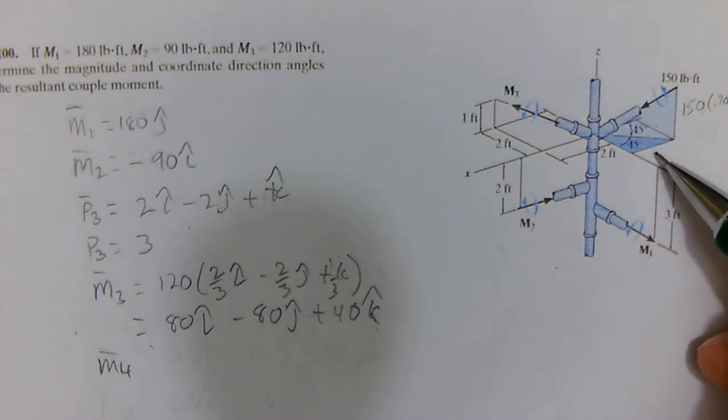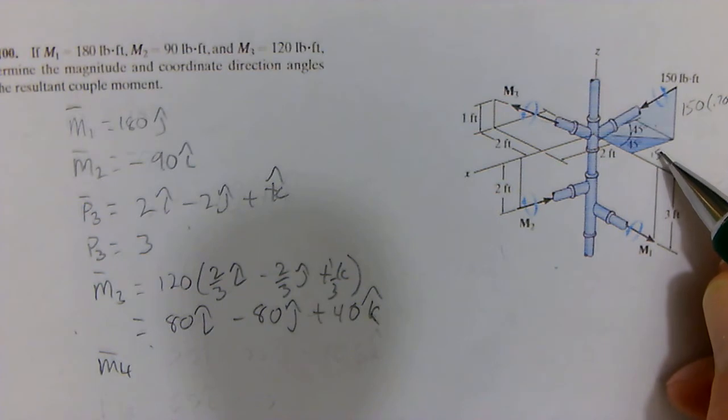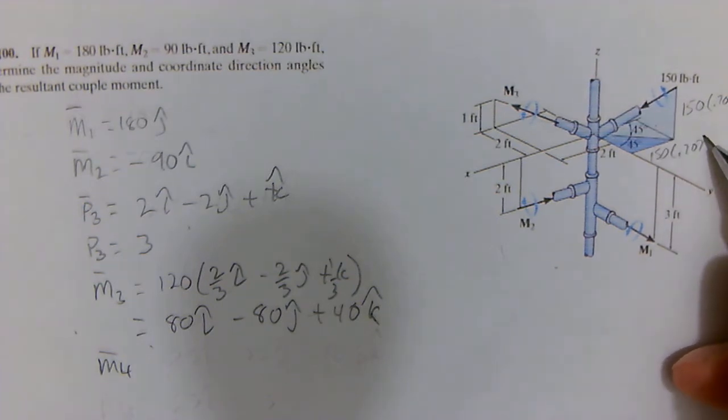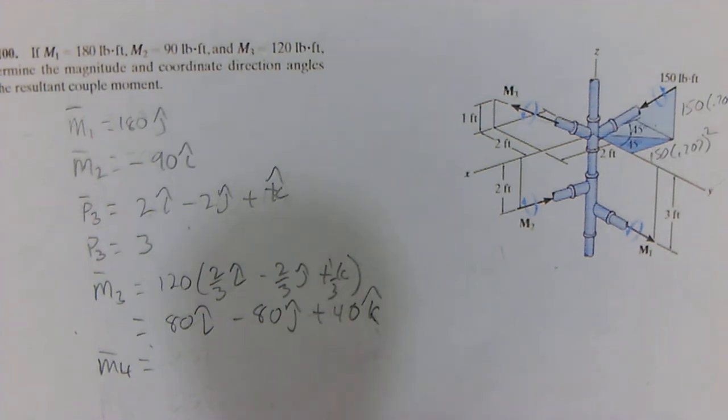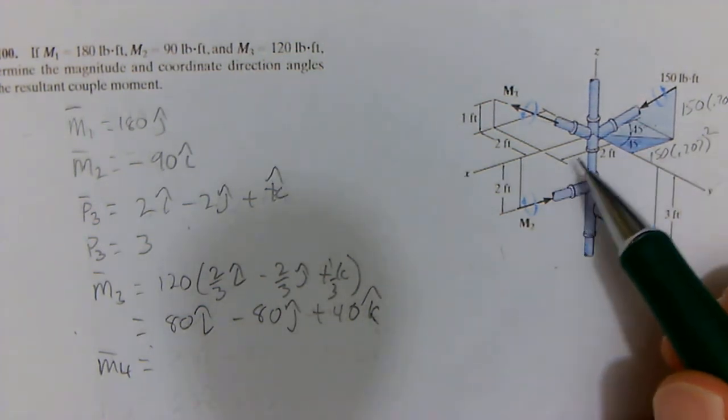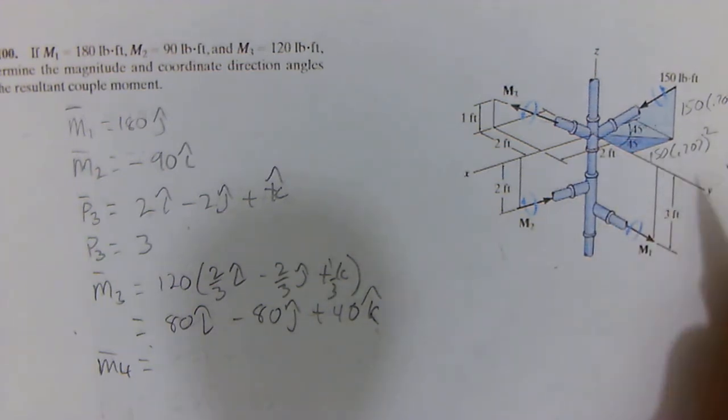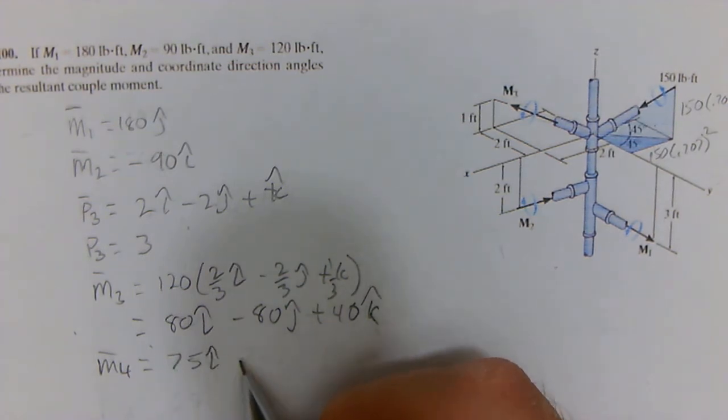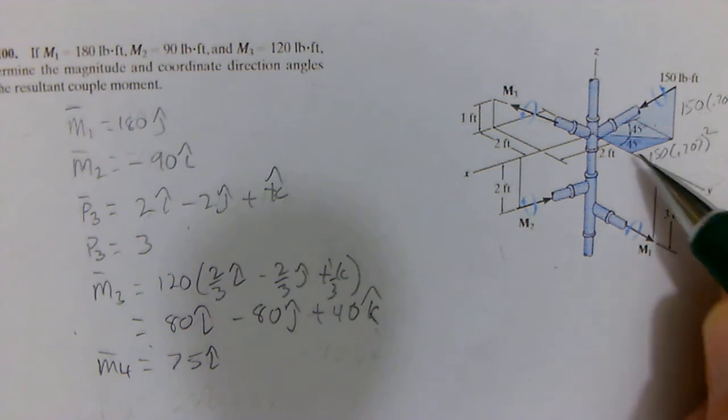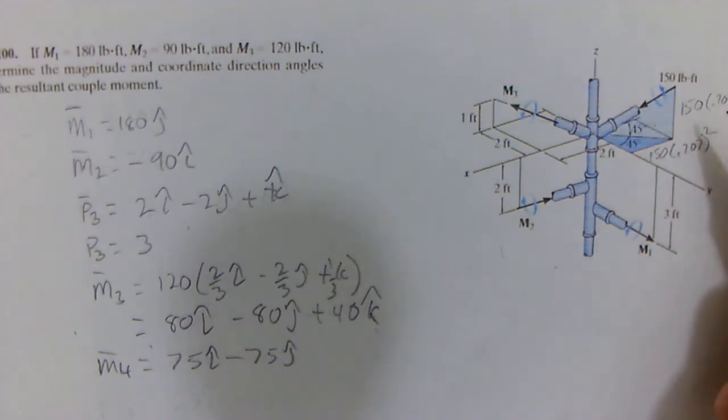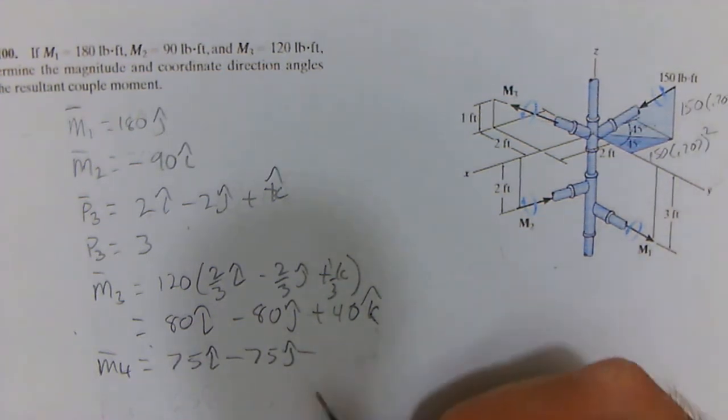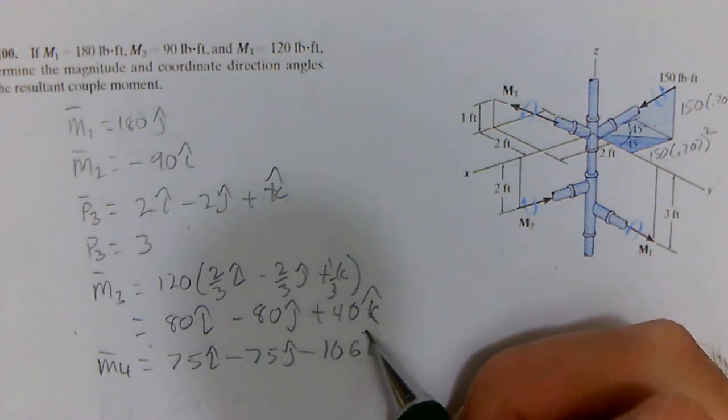So this x and y will be 150 times 0.707, again times 0.707, so 0.707 squared. So M4 in the i, and that's going to be positive i, is 150 times 0.707 squared, or 75. And the j, it's going to be negative, it's going in, so negative 75 in the j. And then down is going to be 150 times 0.707, which is 106 in the k.